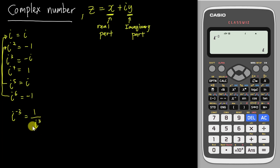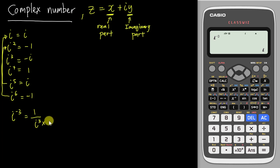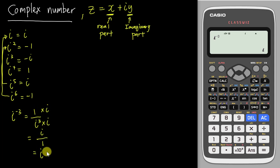For complex numbers, the denominator must never contain i — it must always be a real number. So we need to get rid of i in the denominator. If we substitute i cubed as negative i, the denominator still has i. So instead, we multiply both numerator and denominator by i. That gives i to the power of four in the denominator, which equals one, so we get i divided by one, which is i.